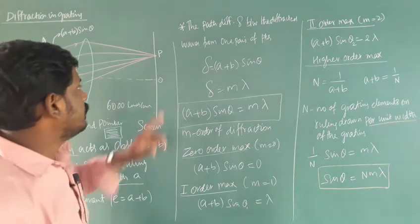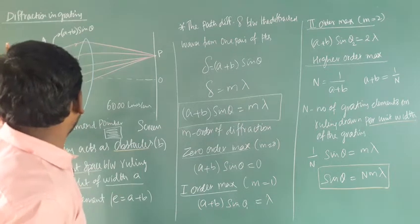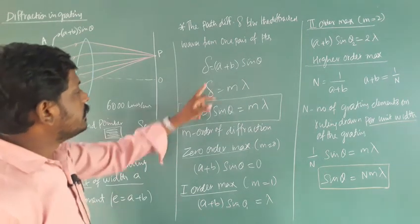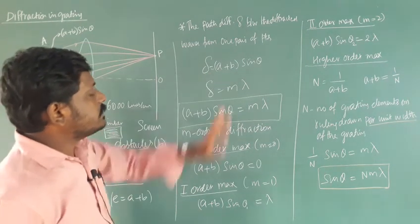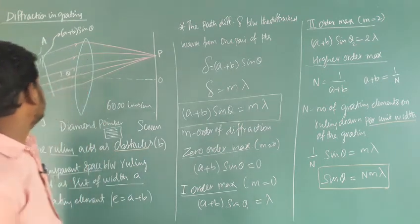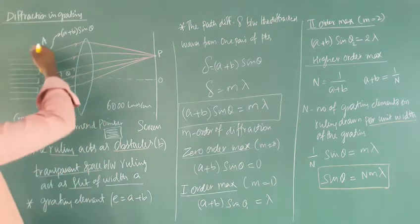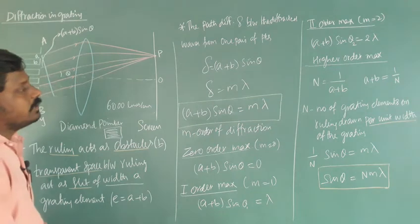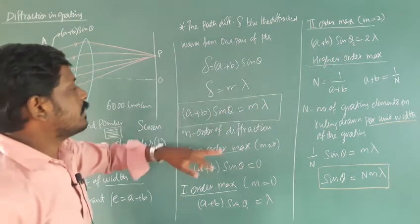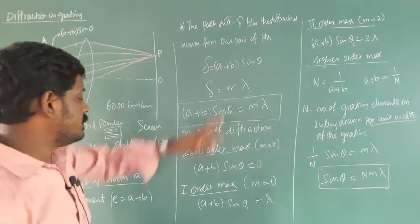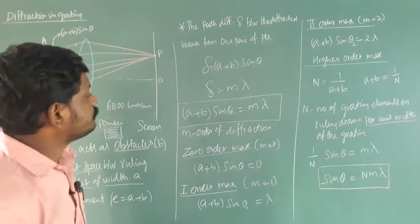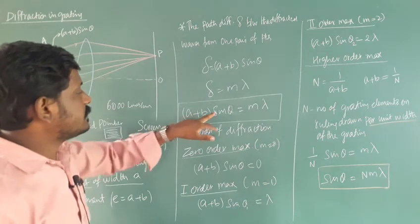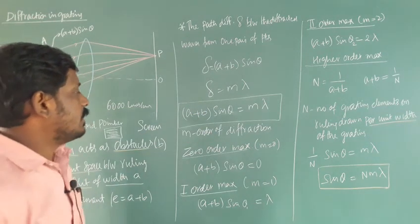The path difference delta between the diffracted waves for one pair of points is delta equal to (A plus B) sin theta. Whatever the pair of points, delta is common. Setting delta equal to m lambda and combining, we get the grating equation: (A plus B) sin theta equal to m lambda, where m is the order of diffraction.